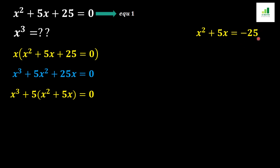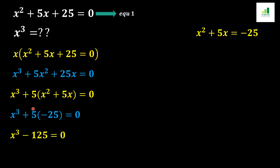We substitute minus 25 in place of x squared plus 5x. So the equation becomes x cubed plus 5 times minus 25 equal to 0. Multiplying 5 by minus 25 gives minus 125, because plus times minus is minus and 5 times 25 is 125.